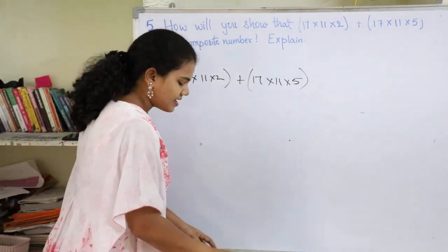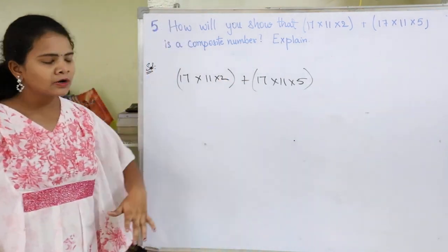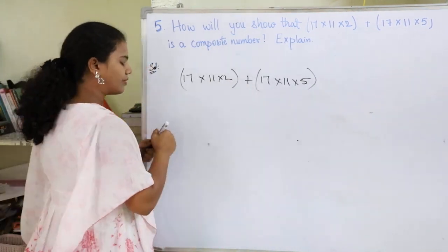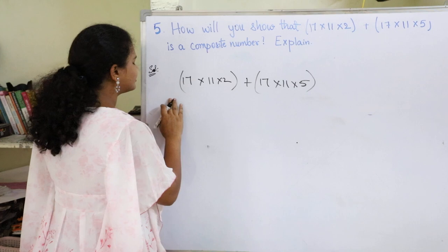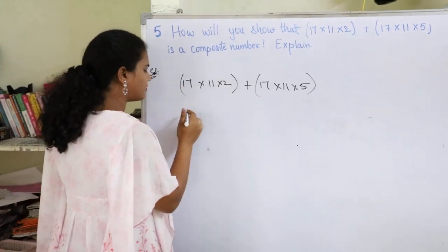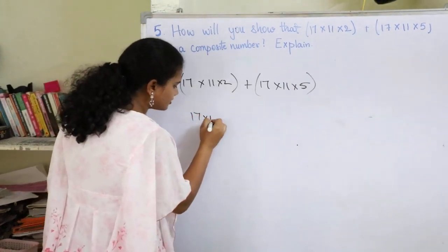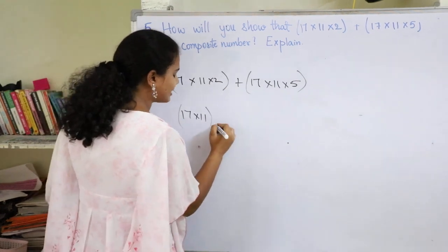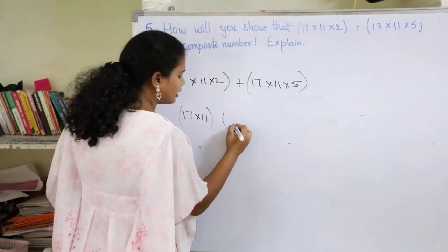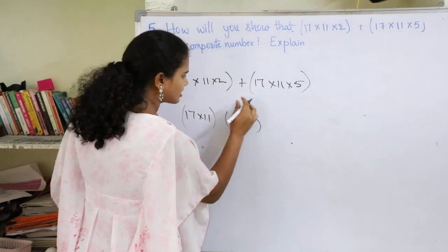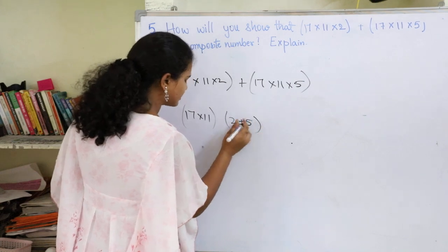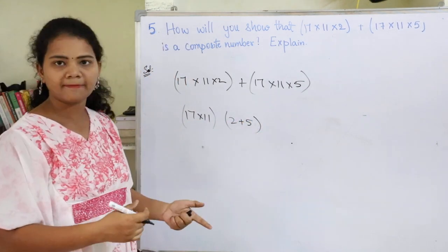Now here, 17 into 11 is a common factor in both terms. Let's take 17 into 11 as common where 2 and 5 remain. Then we have 2 plus 5. This can be written as 17 into 11 into 2 plus 5.